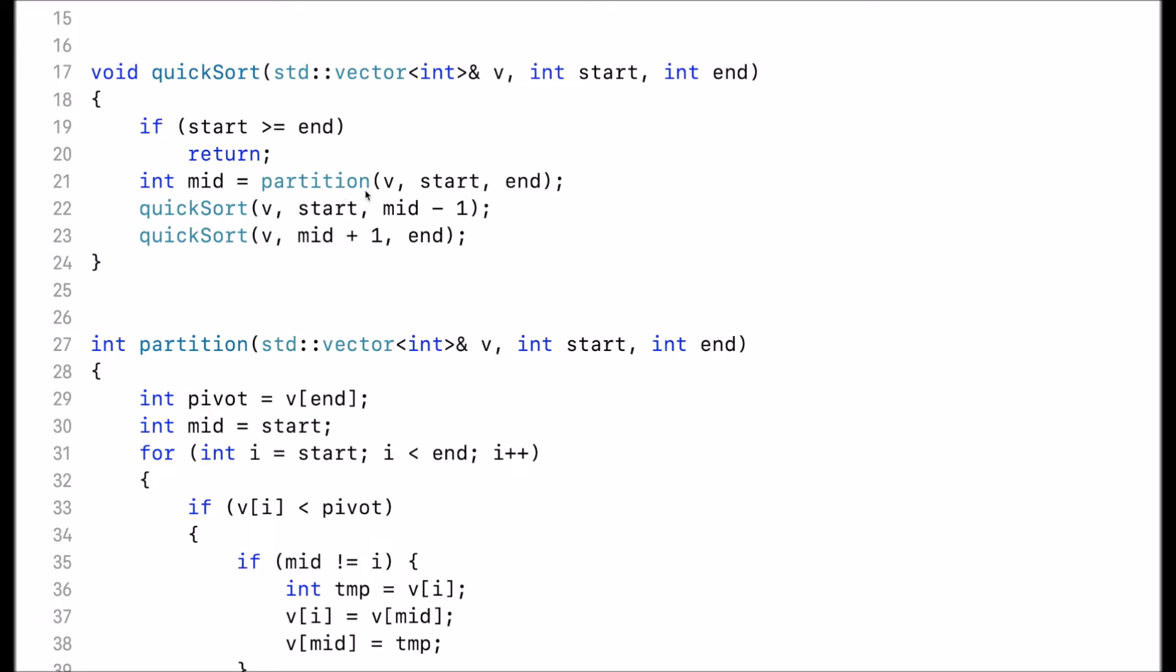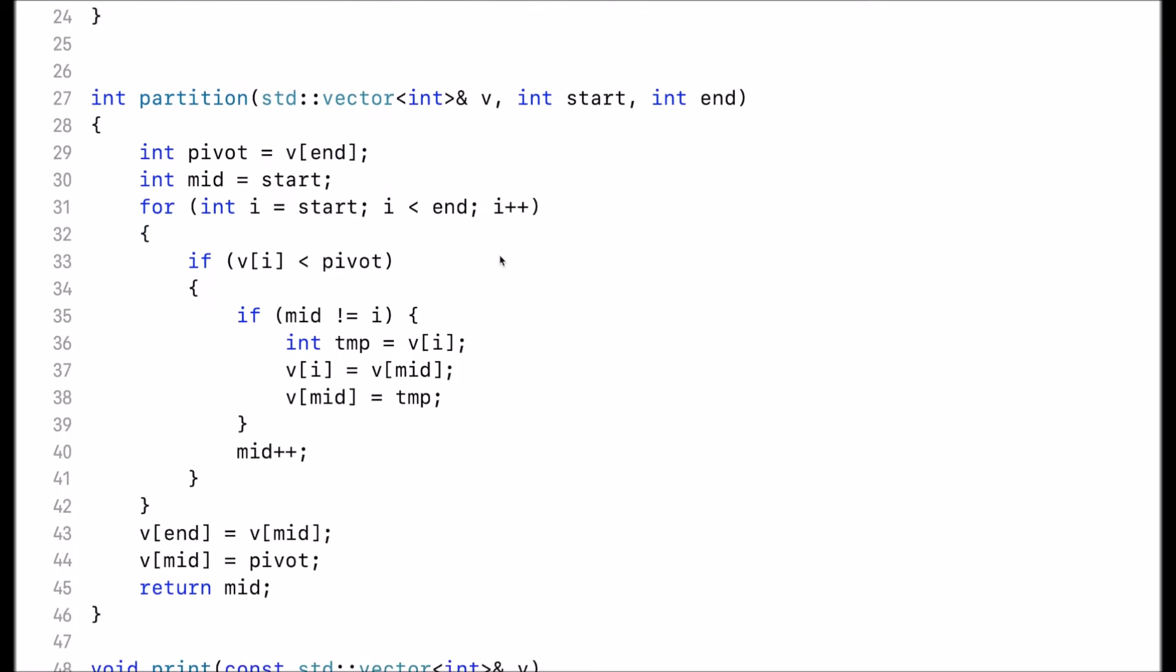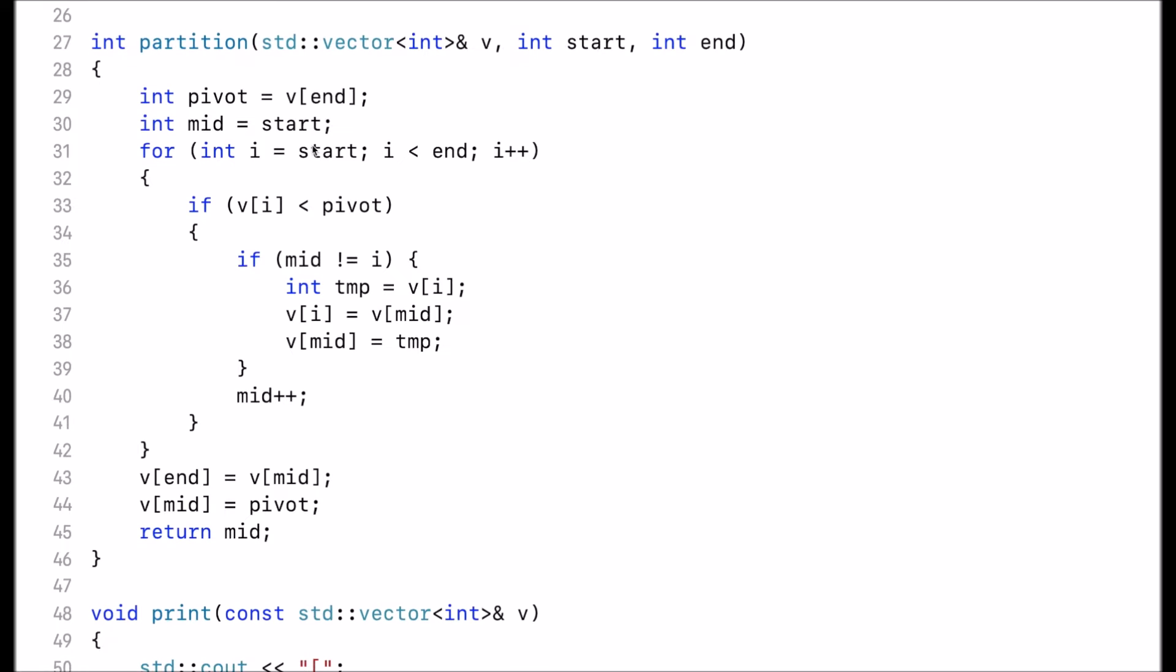Let's take a look at the partition function which sorts the elements. The partition function first gets a pivot element which in this implementation is the last element in the vector. Then it initializes mid to start. This is the very first element in the vector that we are considering.